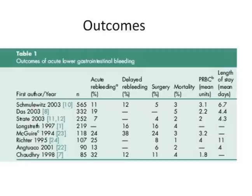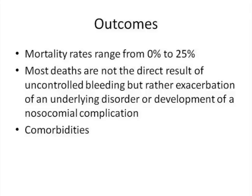In terms of outcomes, although lower GI bleeding is an important and common problem, overall mortality varies from 2% to 5%, which is not very high. However, acute re-bleeding is very common—up to 25% to 30%—and delayed re-bleeding is also common. In series with higher incidence of acute re-bleeding, there is a higher percentage of patients who underwent operative intervention and a much higher number of packed red cells transfused. Mortality ranges from 0% to 25%. Most deaths are not the direct result of uncontrolled bleeding, but rather exacerbation of an underlying disorder or development of a nosocomial complication. Comorbidities are also important in the final outcome.